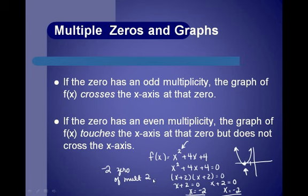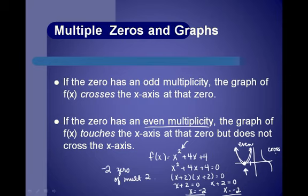With an even multiplicity, the graph comes down to negative 2, touches it, and bounces back up. Whereas if we had something of multiplicity 3, it would come down, touch it, and cross on through. So an even multiplicity touches the x-axis; an odd multiplicity crosses it.